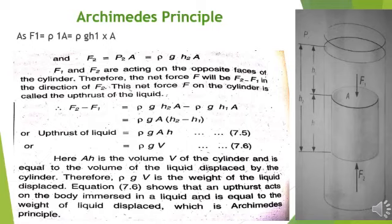We get: F1 equals p1 times A, and F2 equals p2 times A. Since pressure equals ρgh, substituting the values of pressure gives us F1 equals ρgh1 times A, and F2 equals ρgh2 times A. F1 and F2 act on opposite faces of the cylinder. The net upthrust force is F2 minus F1, giving us: F2 minus F1 equals ρgh2·A minus ρgh1·A.